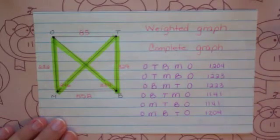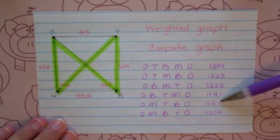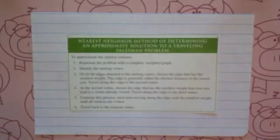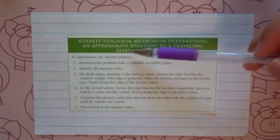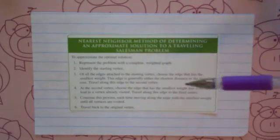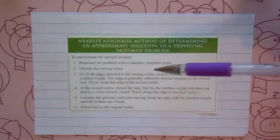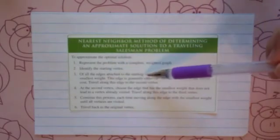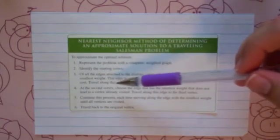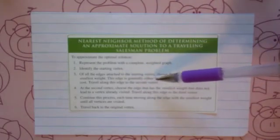We're now going to do this other algorithm — the nearest neighbor method — to see which path it comes up with. In the nearest neighbor method, you find an approximate solution. You start by representing your problem with a weighted graph, identify the starting vertex, then at each vertex choose the edge of smallest weight, continuing this process until you have all vertices connected.